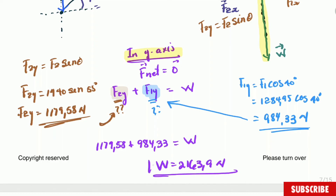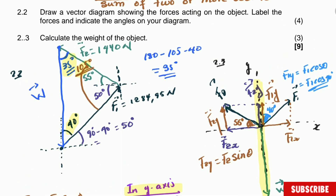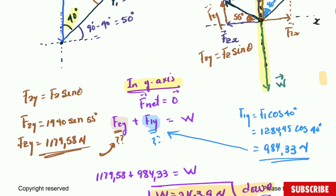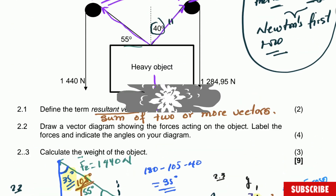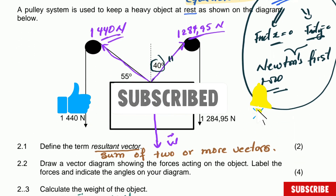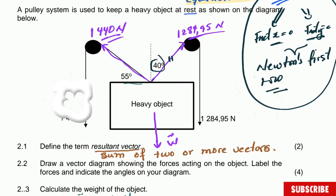The answer for weight is equal to 2,163.9 N. Weight is a vector quantity, so we must give a direction — downward, towards the center of the Earth. This is a question about vectors and a good question to practice for the end-of-year examination. I hope you understand and I hope it helped. Thank you for watching — thumb up, subscribe to the channel. I'll see you next time. Mr. G here.